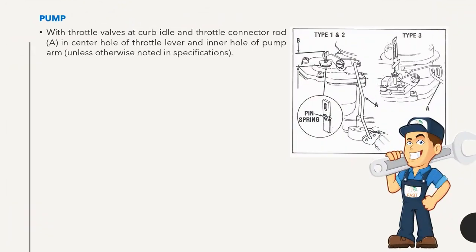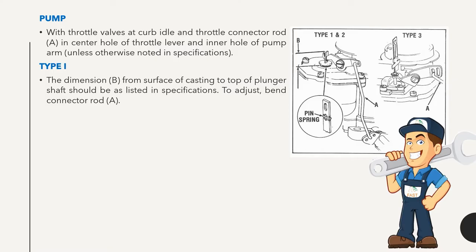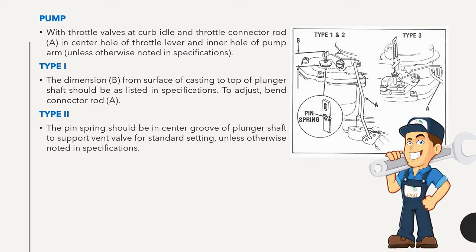Pump: With throttle valves at curb idle and throttle connector rod A in center hole of throttle lever and inner hole of pump arm, unless otherwise noted in specifications. Type 1: The dimension B from surface of casting to top of plunger shaft should be as listed in specifications. To adjust, bend connector rod A. Type 2: The pin spring should be in center groove of plunger shaft to support vent valve for standard setting, unless otherwise noted.